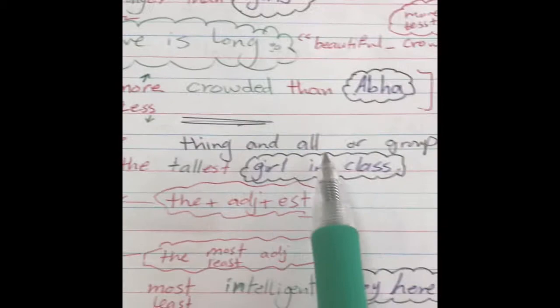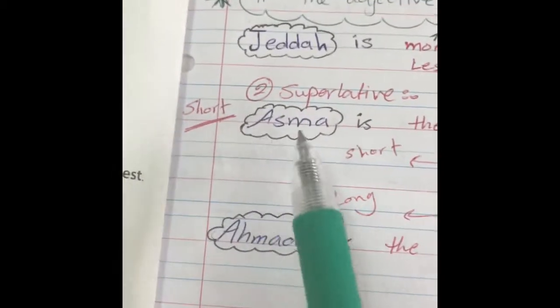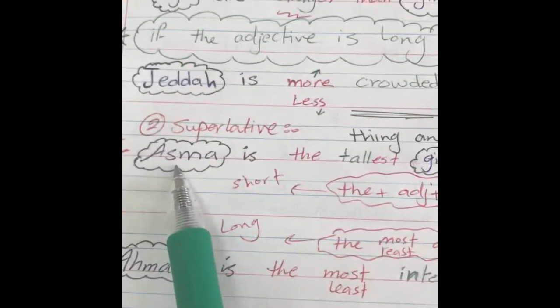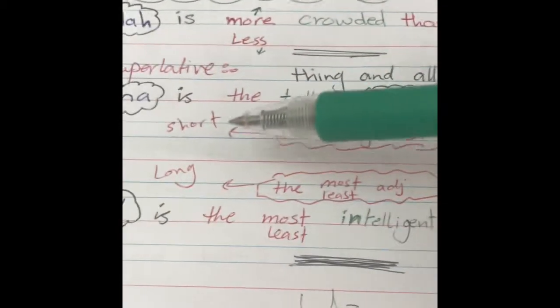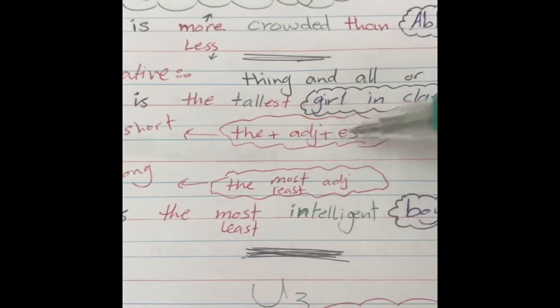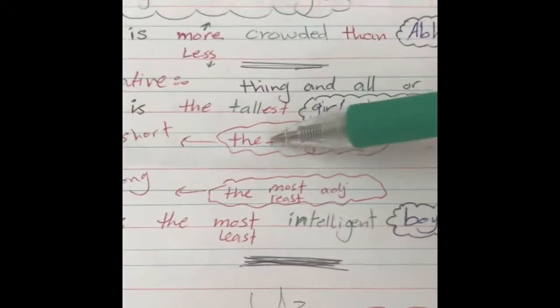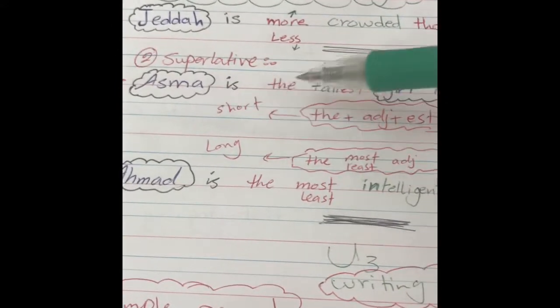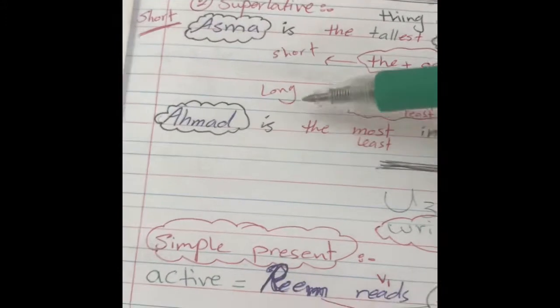Superlative. Superlative means any one thing and all the group. For example, Asma and all the girls in class. What do I do if it's a short adjective? Here I have adjective er than. Here, adjective est. Asma is the tallest girl in class.